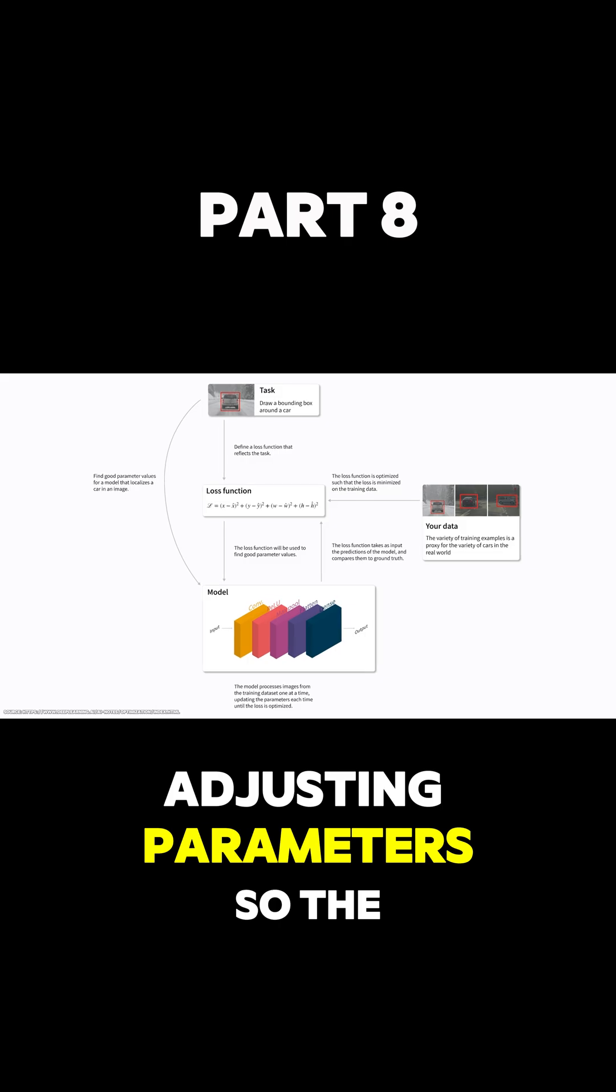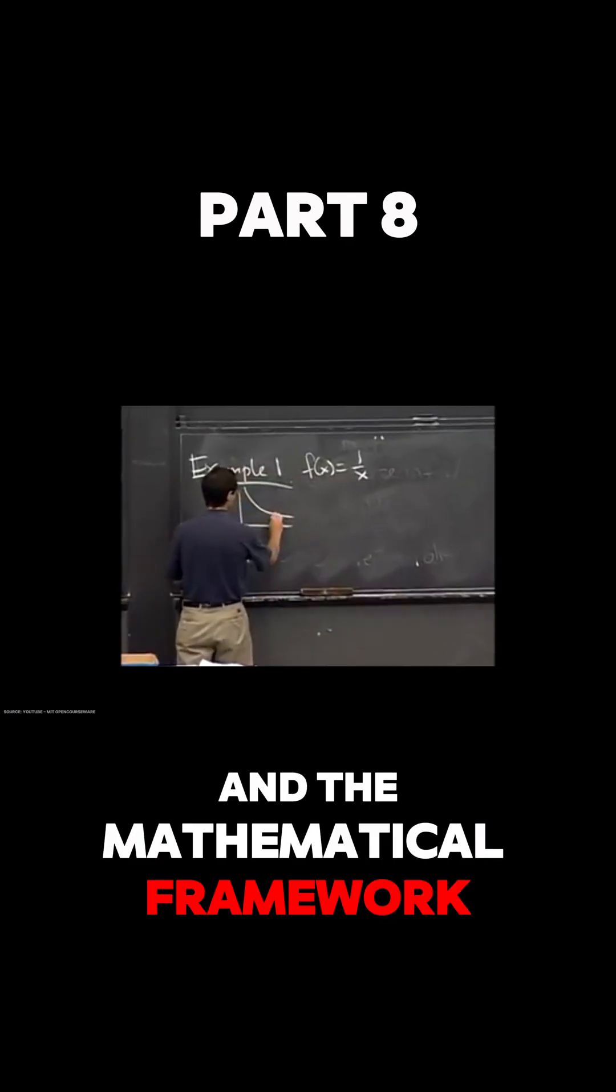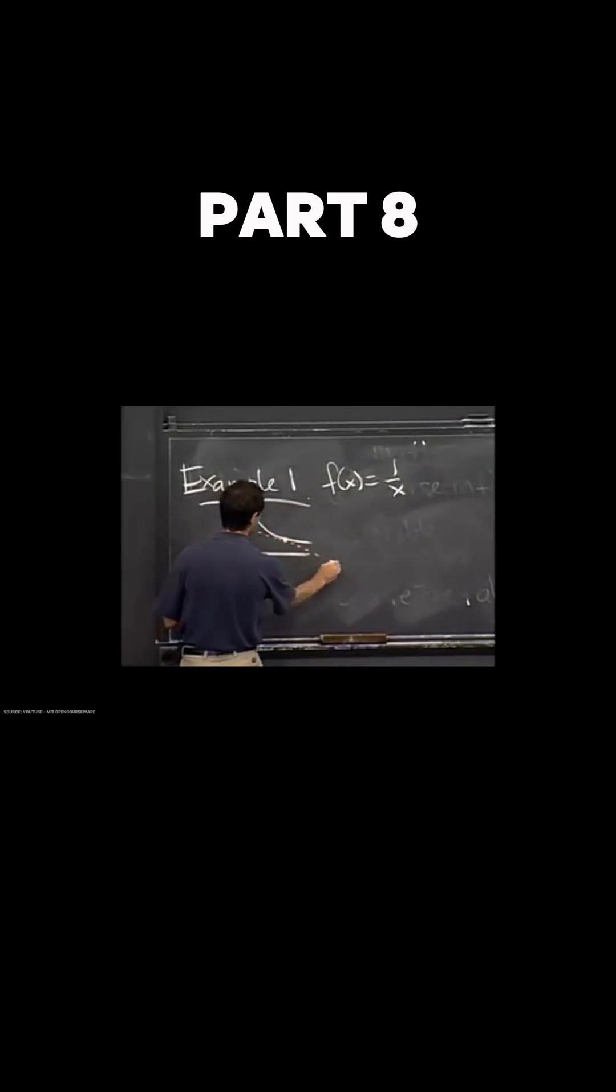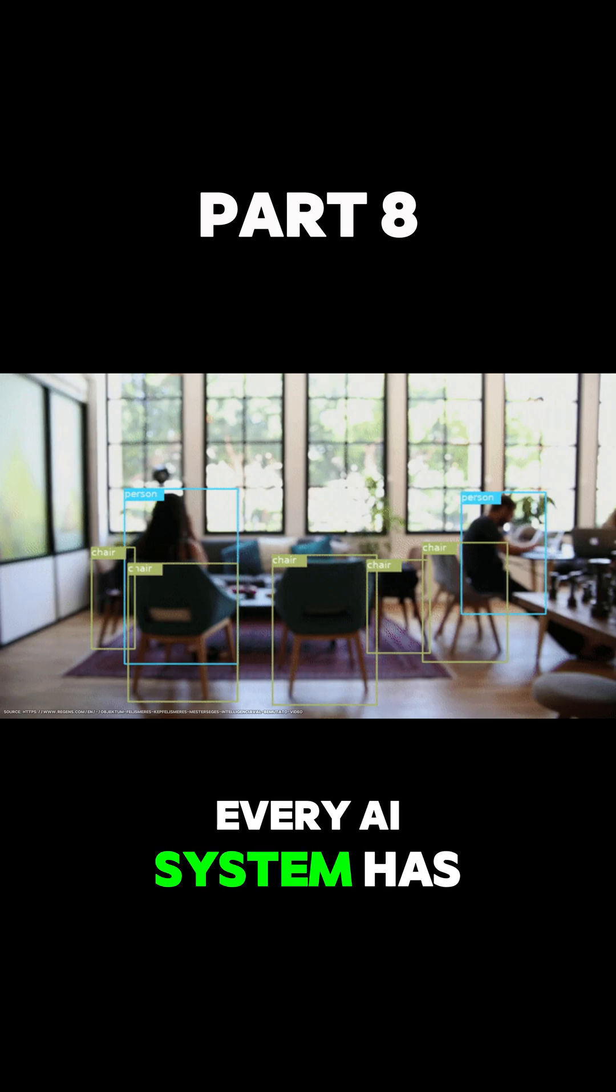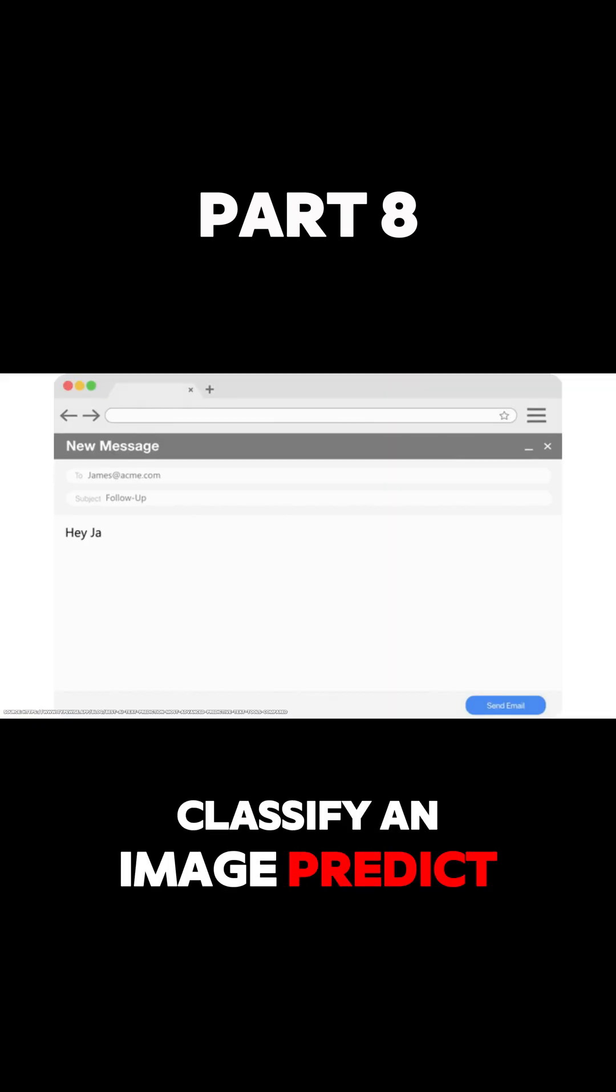At its core, learning in AI is about adjusting parameters so the model performs better over time. And the mathematical framework that tells us how to adjust them? That's calculus. Every AI system has a goal: to correctly classify an image, predict the next word, translate a sentence, or forecast tomorrow's weather.